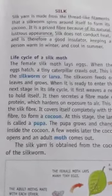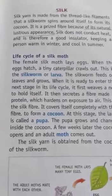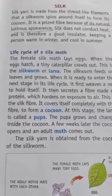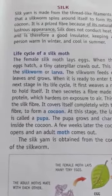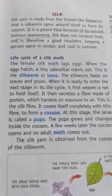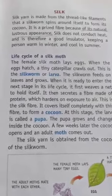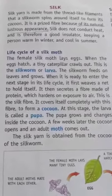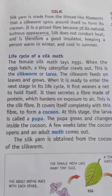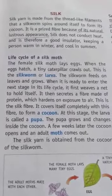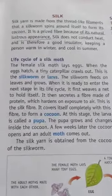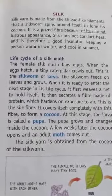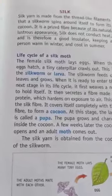Let us learn about the discovery of silk. The discovery of silk was made in China a long time back. According to an old Chinese legend, the Empress Xi Tungqi was asked by Emperor Huangti to find the cause of damaged leaves on a mulberry tree growing in their garden. The Empress found white worms eating up mulberry leaves, and she also noticed that they were spinning shiny cocoons around them.